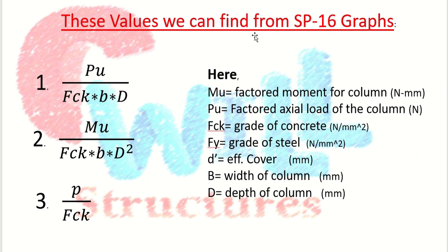The values we can determine from SP16 charts for a column are: Pu/(fck·B·D) on the y-axis, Mu/(fck·B·D²) on the x-axis, and P/fck from the curves. Here, Mu is the factored moment, Pu is the factored axial load, fck is the grade of concrete, fy is the grade of steel, d' is the effective cover, B is the width of column, and D is the depth of column.